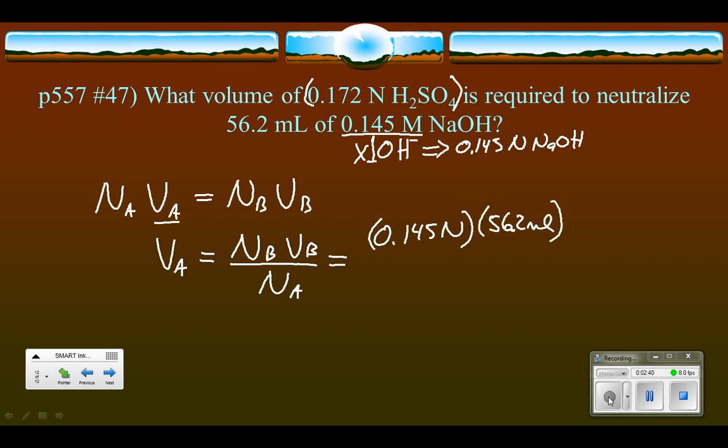We do not have to change that as long as we don't mind that the volume comes out in milliliters. So on the bottom goes the normality of the acid, which was 0.172 normal.